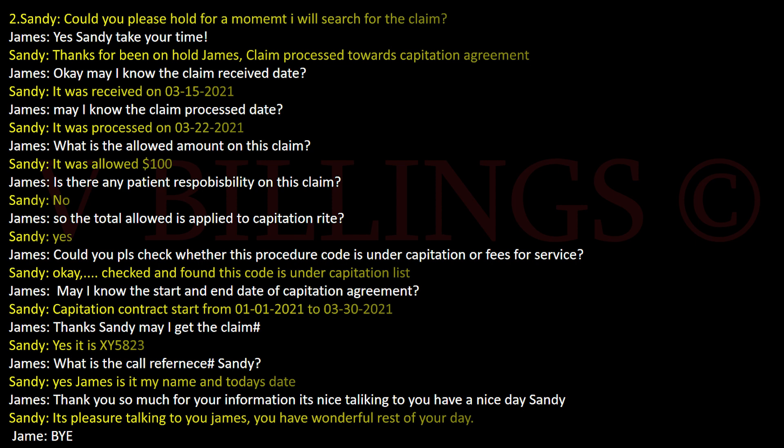What is the billed amount on the claim? The billed amount is $150. Could you please hold for a moment, I will search for the claim. Yes, take your time. Thanks for being on hold, James. The claim was processed toward capitation agreement. The claim was received on March 15, 2021, and processed on March 22, 2021. The allowed amount on the claim is $100. Is there any patient responsibility? No, James, there is no patient responsibility on the claim.